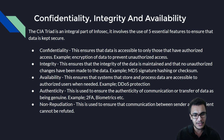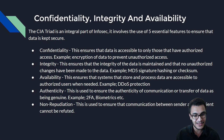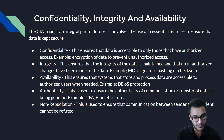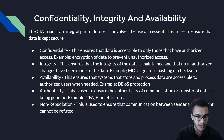Number two: integrity. Integrity is used to ensure that no unauthorized changes have been made to the data. For example, you can use things like MD5 signature hashing or checksums, which generate a unique hash for a particular file or folder. If any changes are made, a different hash is generated, allowing you to use deductive logic to determine that a breach of integrity has occurred.